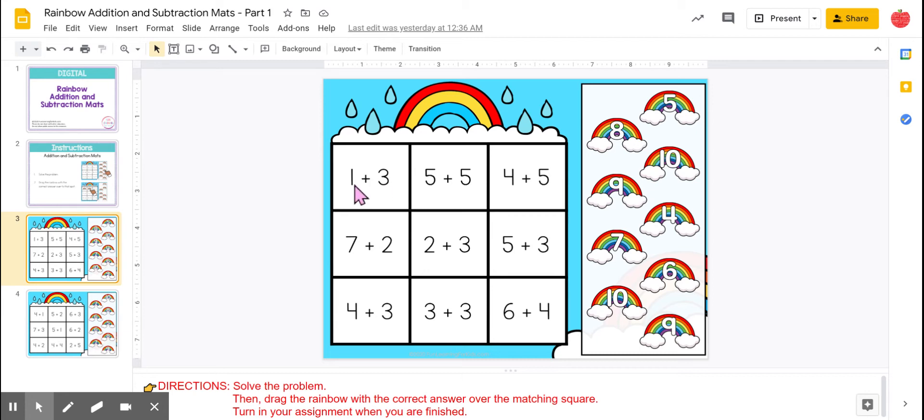So let's do the first one together. One plus three. I'm adding because I have the plus sign here. That means I'm putting these numbers together. So what is one plus three more?